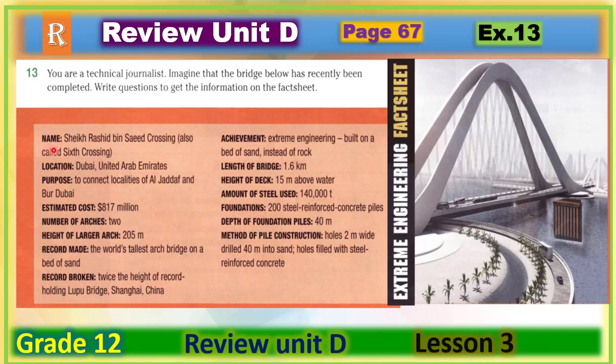We have here some information and all you have to do is just to write some questions about the information here. Name: Sheikh Rashid bin Saeed crossing. This is the name of the bridge. Location: Dubai in the United Arab Emirates. Purpose: to connect localities of Al-Jadaf and Bur Dubai. Estimated cost: 817 million dollars. Number of arches: two. Height of larger arch: 205 meters. Record made: the world's tallest arch bridge on a bed of sand.